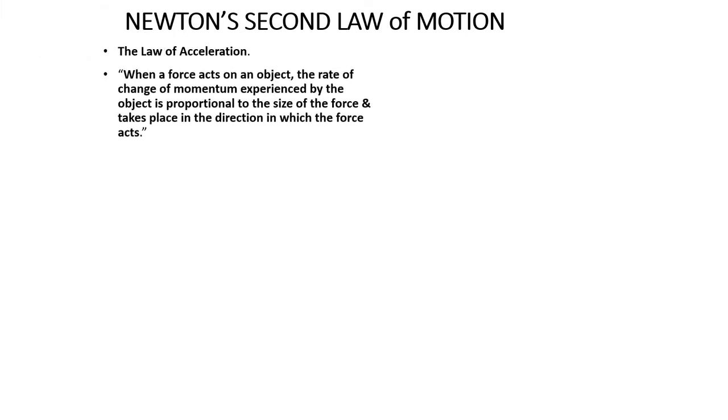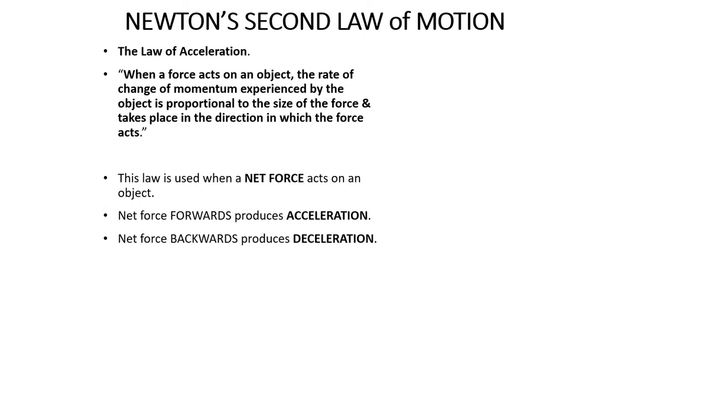Okay, so the second law of motion is the law of acceleration. We've got first law is the law of inertia, second law is the law of acceleration. So this states that when a force acts on an object, the rate of change of momentum experienced by the object is proportional to the size of the force and takes place in the direction in which the force acts. So this happens when there is a net force, so the forces applied to the object are not balanced. And a net force forwards will produce acceleration and a net force backwards will produce deceleration. A net force sideways will produce a change of direction, and obviously the bigger the force applied, the bigger the acceleration.